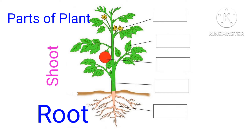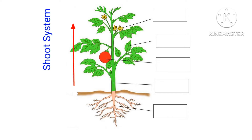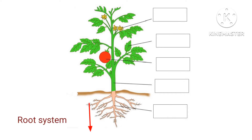The part of the plant that appears above the ground level is called the shoot system, while the part of the plant which lies under the soil is called the root system. For better understanding, we need to know in detail about the different parts of plants and their function. So let's have a glance at the structure of different plant parts and how they are beneficial to the environment.